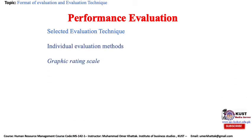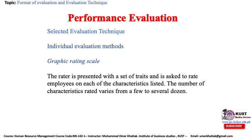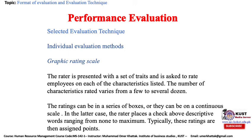The first individual evaluation method is the graphic rating scale — the oldest and perhaps the most common method. The rater is presented with a set of traits and is asked to rate employees on each characteristic listed, ranging from a few to several dozen. Ratings can be in a series of boxes or on a continuous scale, with the rater placing a check above descriptive words ranging from none to maximum. These ratings are then assigned points — for example, outstanding may be assigned a score of four and unsatisfactory a score of zero — and total scores are computed. Greater weight may be given to traits regarded as more important, and raters are often asked to explain each rating with a sentence or two.